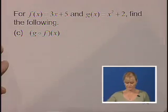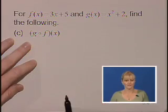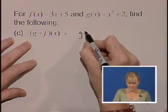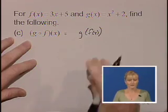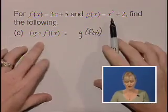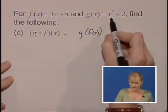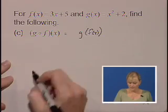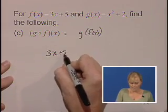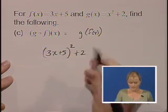Part C asks us for G of F of X. So we're going to rewrite that as G of F of X. So wherever we see an X in the G function, we're going to replace it with the entire function F of X. Our original G of X function is X squared plus 2, so we are going to replace X with the entire F function, 3X plus 5. Remember to square it, plus 2.